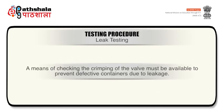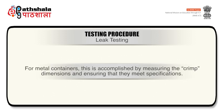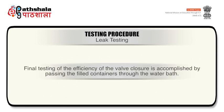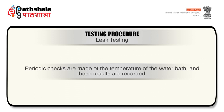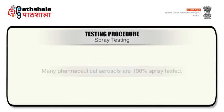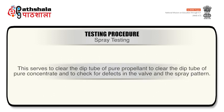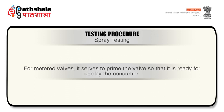A means of checking the crimping of the valve must be available to prevent defective containers due to leakage. For metal containers, this is achieved by measuring the crimp dimensions and ensuring that they meet specifications. Final testing of the efficiency of the valve closure is accomplished by passing the filled containers through the water bath. Periodic checks are made of the temperature of the water bath and results are recorded. Many pharmaceutical aerosols are 100% spray tested. This serves to clear the dip tube of pure propellant or pure concentrate and to check defects in the valve and the spray pattern. For metered valves, it serves to prime the valve so that it is ready for use by the consumer.